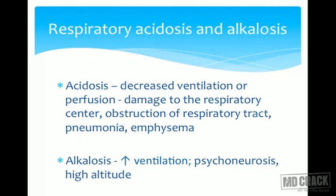Causes of respiratory acidosis involve abnormal ventilation — if CO2 excretion is reduced, CO2 accumulates and generates acidosis. Conditions that can depress ventilation include damage to respiratory centers, decreased alveolar capillary membrane perfusion (as in pneumonia), or obstruction to the respiratory passage (as in emphysema).